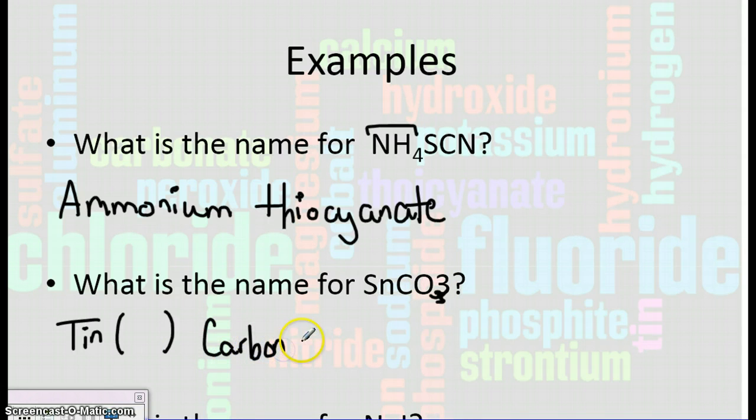Now we have to determine the charge on tin. So we have to go backwards. Well, there's no parentheses around the CO3, so that means that we should think it's a 1, because there's nothing out here. But let's go ahead and double-check our charges.